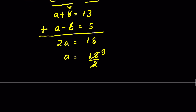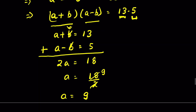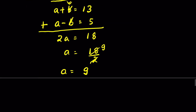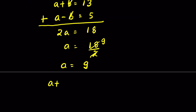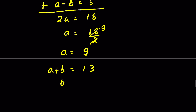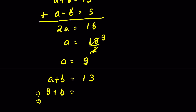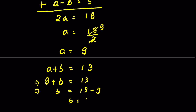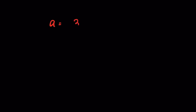So a = 18/2 = 9. From here we can find b: a + b = 13, so 9 + b = 13, which gives b = 13 − 9 = 4. Recall we defined a = 3^(x/2) and found a = 9.